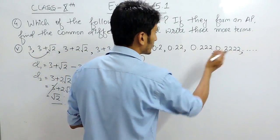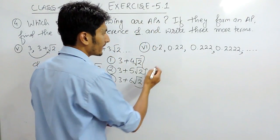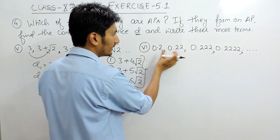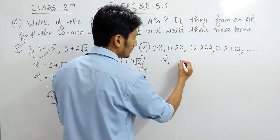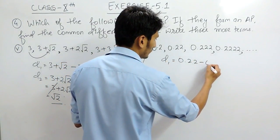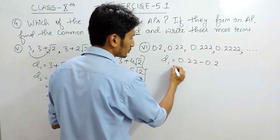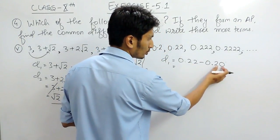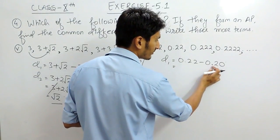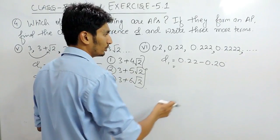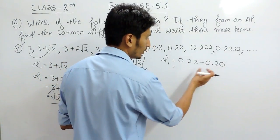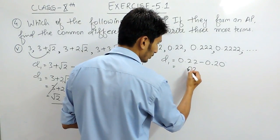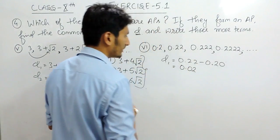Now for part 6, we have to check whether this series forms an AP by checking if we are adding a constant term. Subtracting 0.2 from 0.22: since 0.22 has 2 decimal digits and 0.20 also has 2 digits, we compute 0.22 minus 0.20, which gives 0.02. So our first common difference is 0.02.